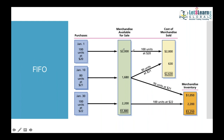Under FIFO: 100 units sold from the $20 lot = $2,000 COGS; 30 units from the $21 lot = $630 COGS; total COGS = $2,630. Remaining ending inventory: 50 units at $21 and 100 units at $22. Whether asked in MCQ format or otherwise, you need to find three components: ending inventory, cost of goods sold, and gross profit if selling price is given.